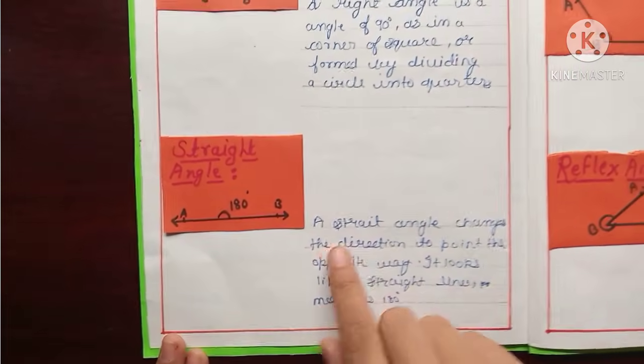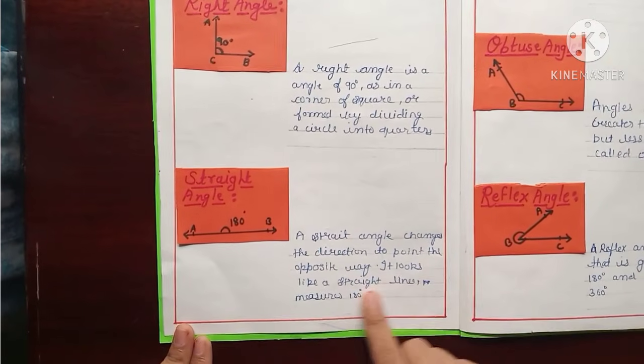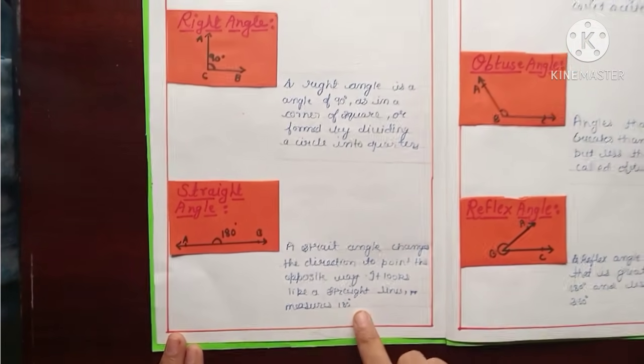Now second is straight angle. A straight angle changes the direction to the point the opposite way. It looks like a straight line measures 180 degree.